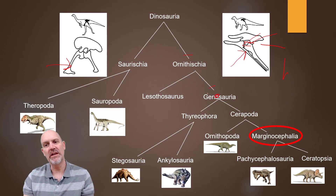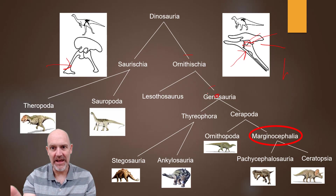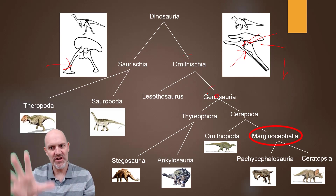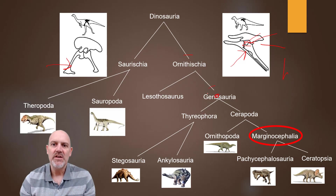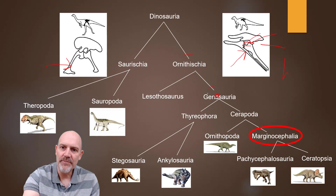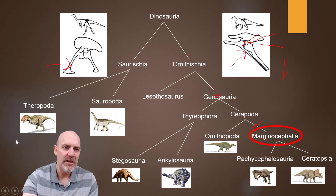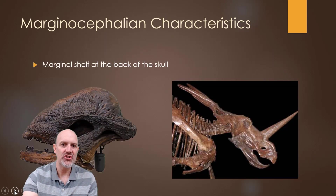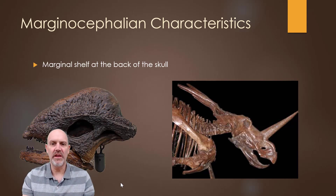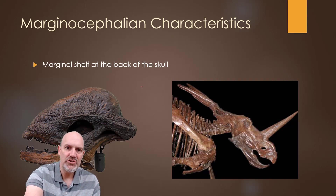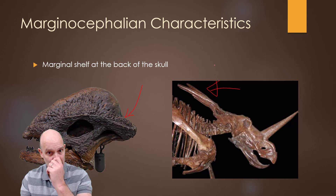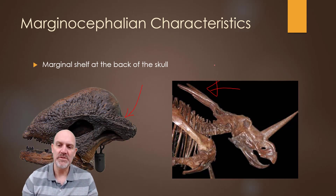If we click on Cerapoda it opens up again. We have Ornithopoda, which we'll get to later, and Marginocephalia — another big group. Marginocephalia also has a synapomorphy: the shelf head. That's the new synapomorphy we're looking at in this lecture. You can see on the Pachycephalosaur on the left and the Ceratopsian on the right they both have these large shelves on the back of the head.